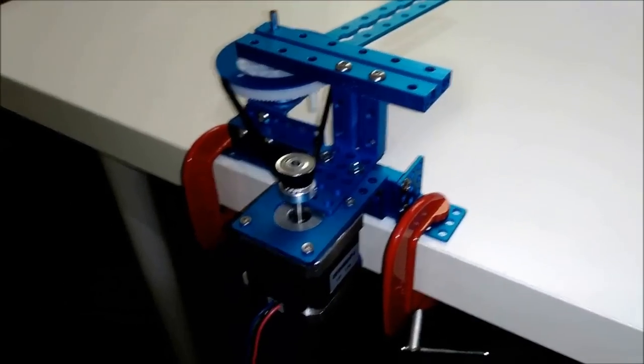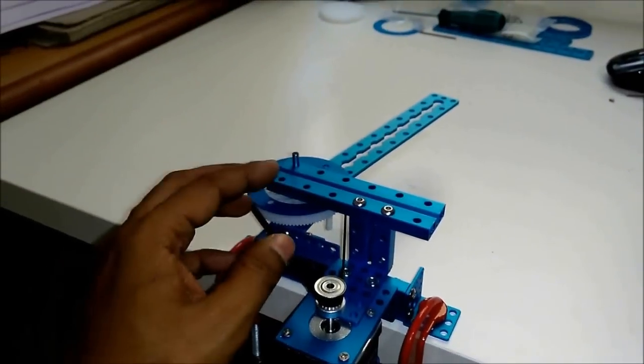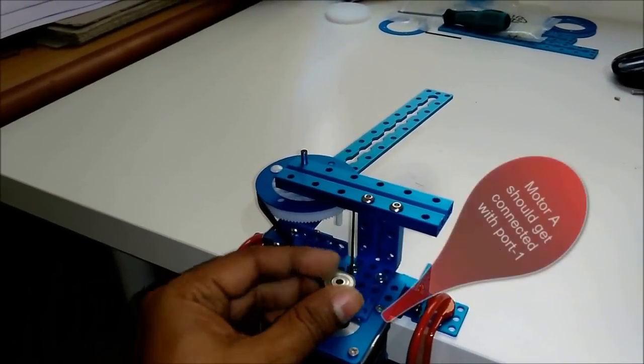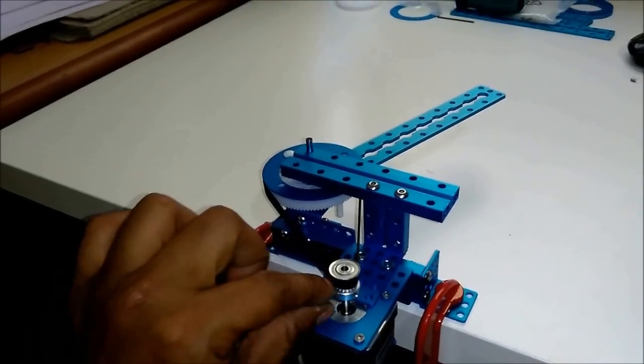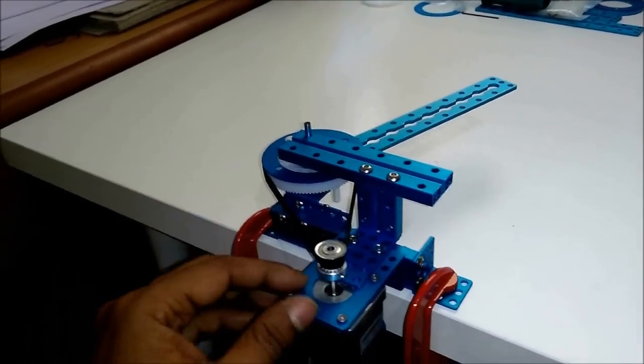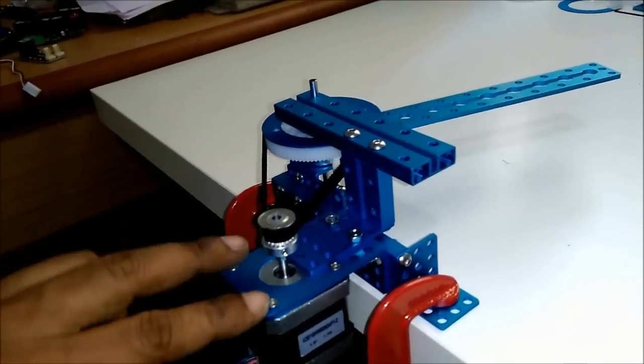And I connected the first arm with the motor which is called motor A, which should be connected with port 1. I faced a little difficulty to set the level and the angle of the motor so I fitted this screw first and then fitted the next two screws.